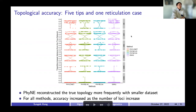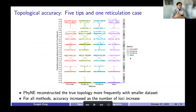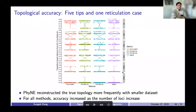When the number of loci was 200, 500, or 1,000, all four methods performed similarly, reconstructing the true topology about half of the time with frequency increasing as we get more loci. When the number of loci was 3,000, all four methods performed similarly well, reconstructing the true topology pretty frequently and most frequently with SNAC. When the number of loci was 5,000, all four methods almost always reconstructed the true network topology.